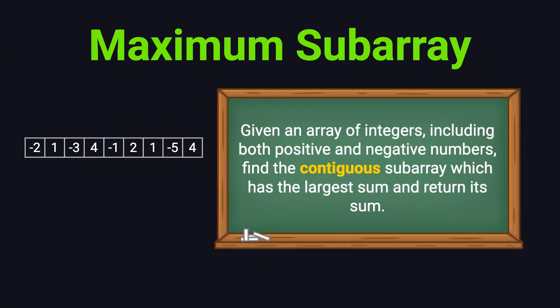Let's start by understanding what the problem is asking. Suppose you're given an array of integers. Some numbers are positive, some are negative. Your task is to find a contiguous subarray — that means the numbers must be next to each other — such that the sum of those numbers is as large as possible, and then return that maximum sum.